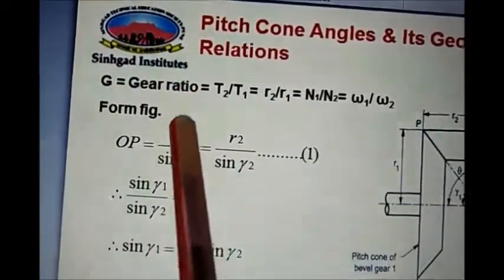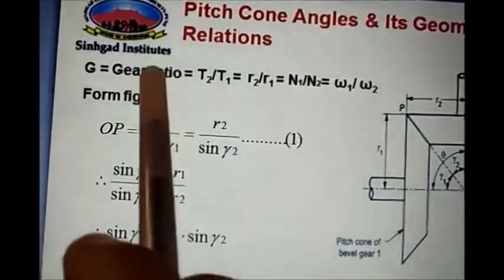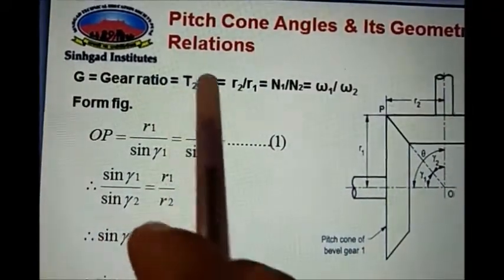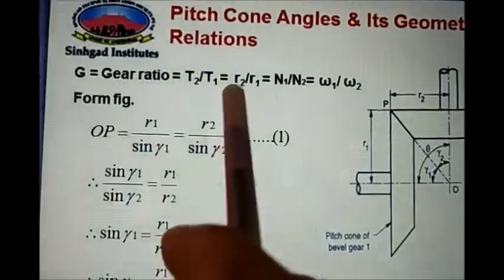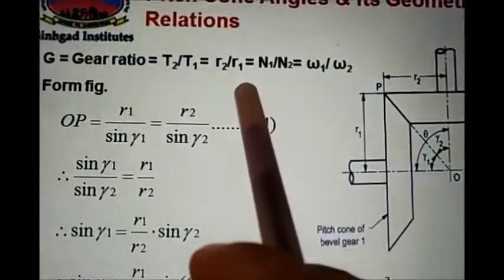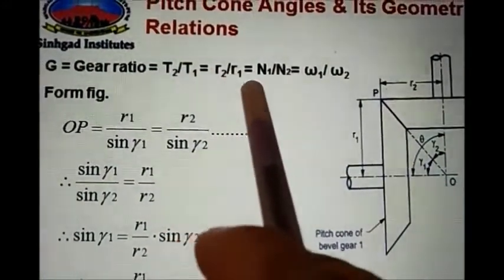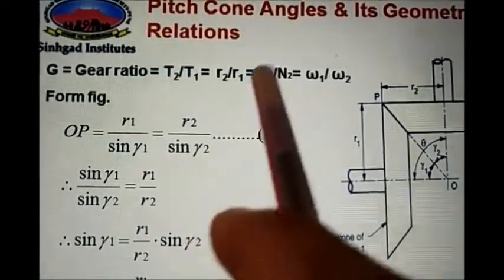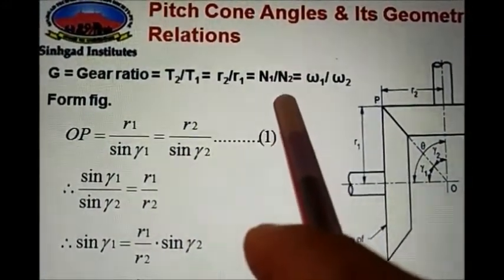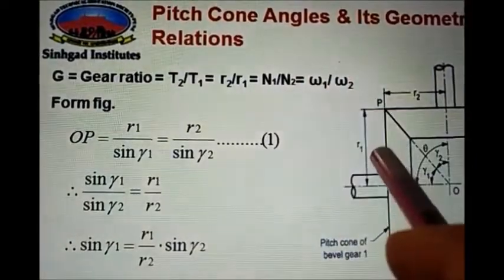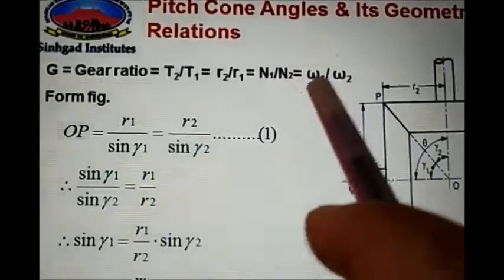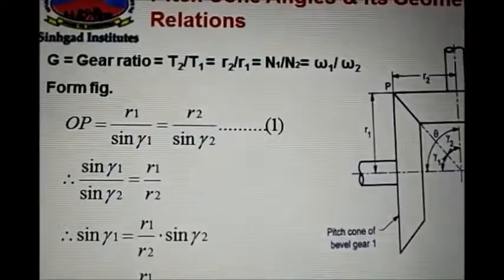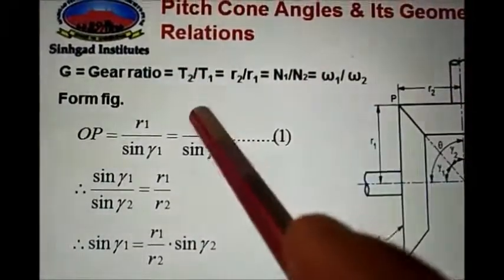Starting with gear ratio: the gear ratio G equals T2 over T1, equals R2 over R1, equals N1 over N2, or omega 1 over omega 2. The number of teeth is inversely proportional to the RPM.